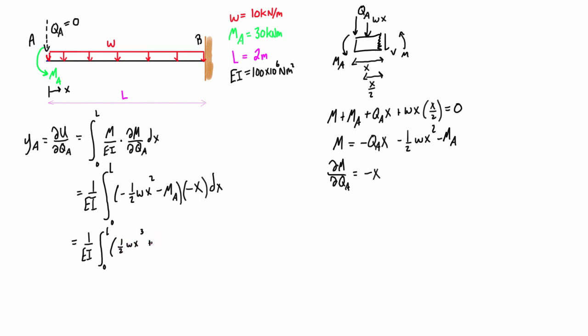Let's do this integration now. We get one over EI is going to be multiplied by, well this will go to X to the power of 4 times a quarter, so we have one eighth WX to the fourth.